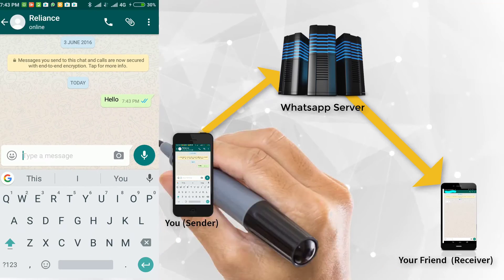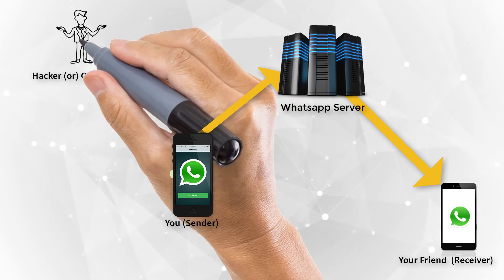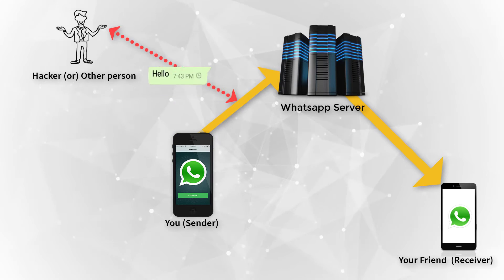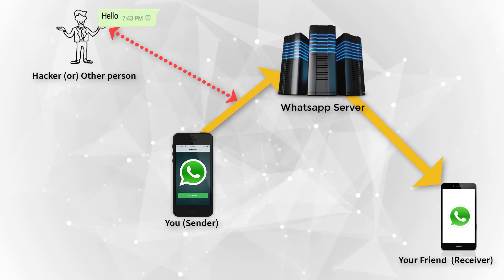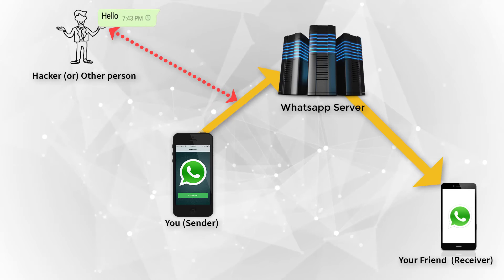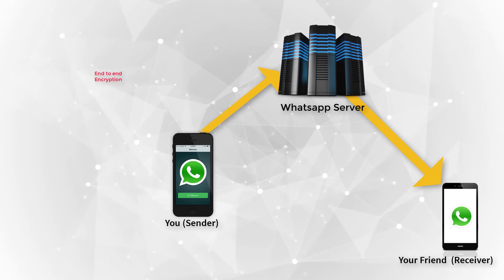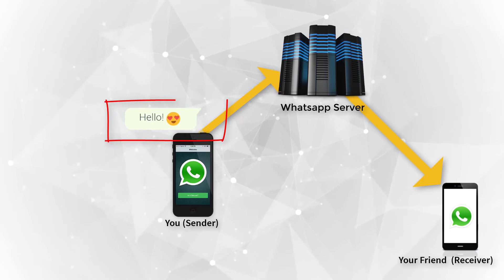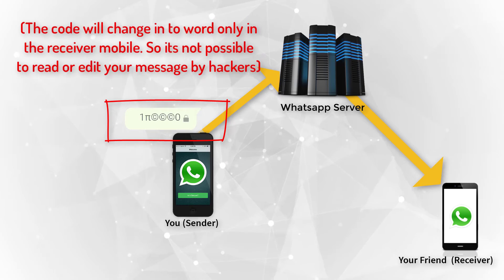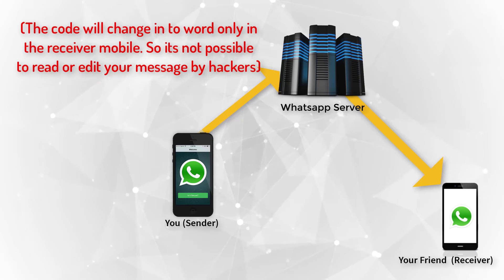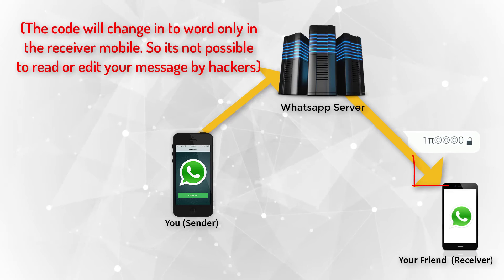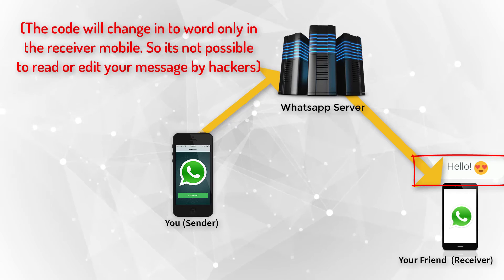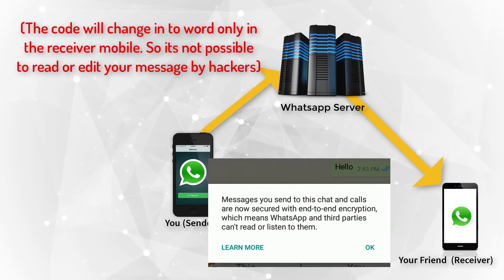In between these processes, any hackers or other persons can enter and see or edit the message that you send. To avoid this, WhatsApp introduced a new feature called end-to-end encryption. In this, the message that you send will be converted into code, and this code changes back into words only when it reaches your friend's mobile. So only your friend can read the message, and no one else can read or edit it.